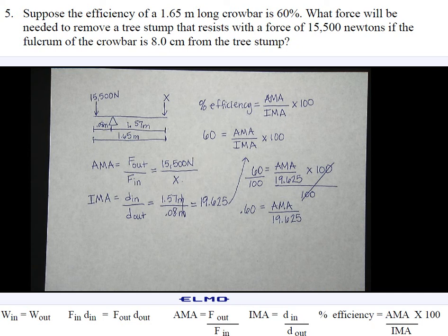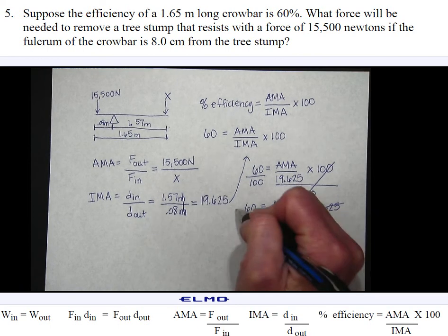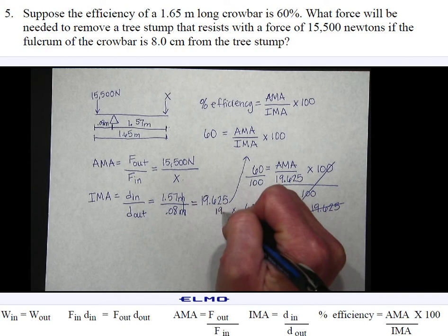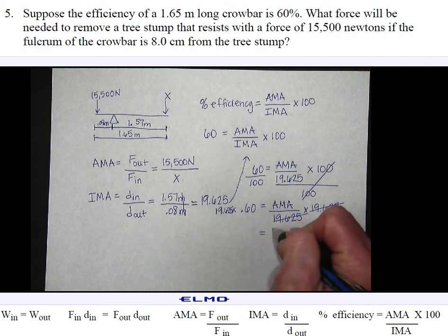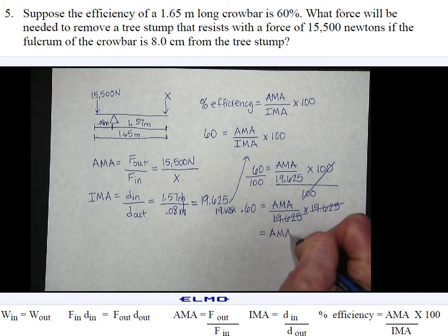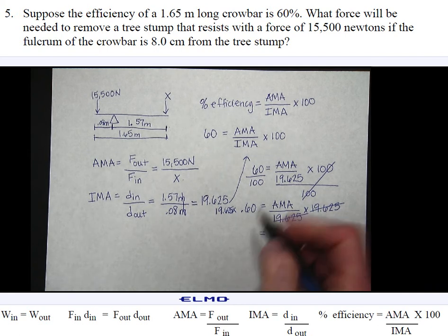Now to get AMA by itself, I need to undo dividing by 19.625, so I'm going to multiply both sides by 19.625. So I find my actual mechanical advantage is 11.775.